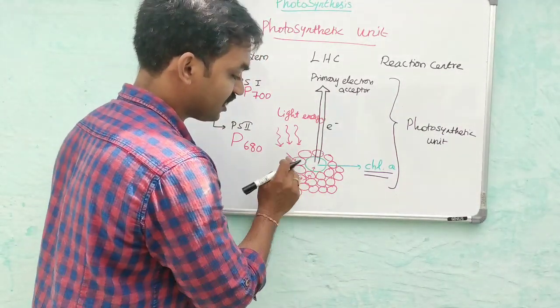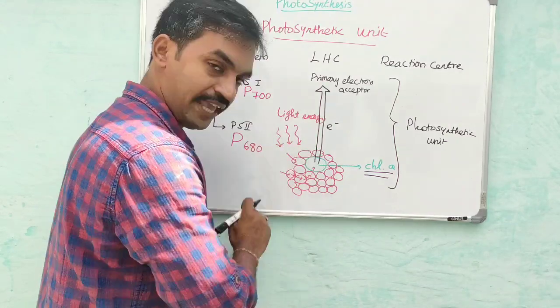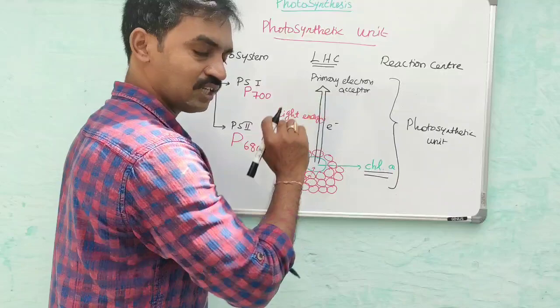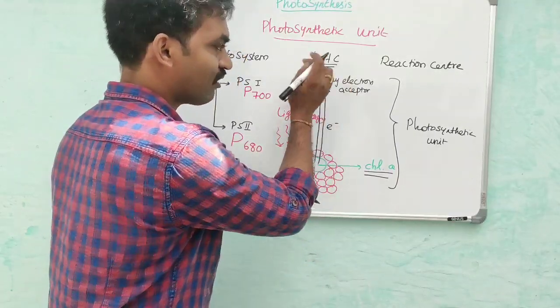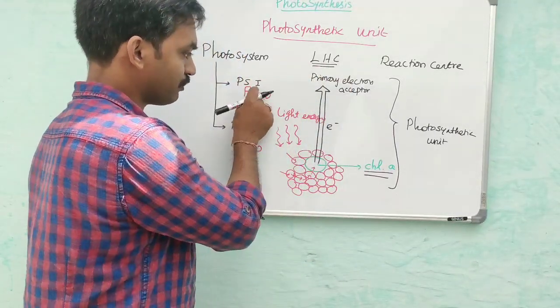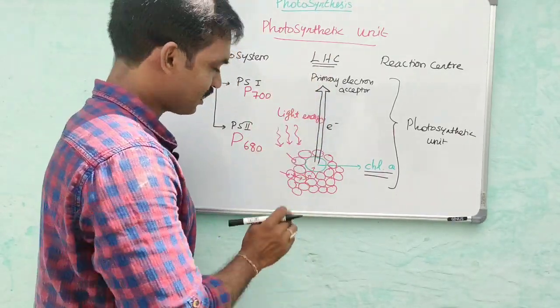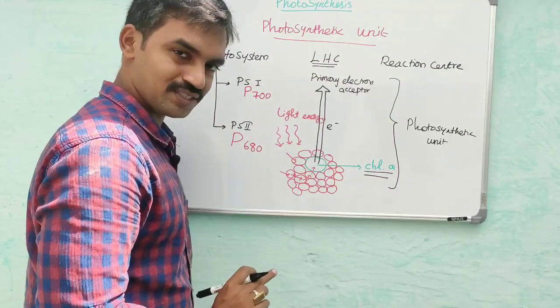The accessory pigments that harvest light energy and transfer it to chlorophyll a are called light harvesting complexes. The light harvesting complex associated with PS1 is called LHC1, and the one associated with PS2 is called LHC2.